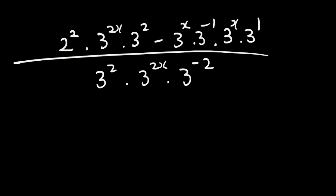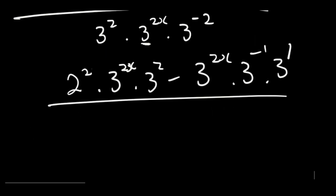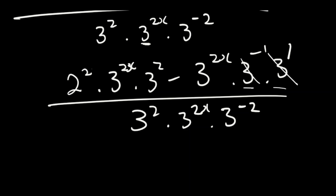We can see 3 to the power of 2x appears in multiple terms, including in the second term where adding the x exponents gives 3 to the power of 2x. We also note that 3 to the power of minus 1 multiplied by 3 to the power of 1 equals 3 to the power of 0, which is 1. So we're left with 2 to the power of 2 multiplied by 3 to the power of 2x, multiplied by 3 to the power of 2x, divided by 3 to the power of 2 multiplied by 3 to the power of 2x multiplied by 3 to the power of minus 2.